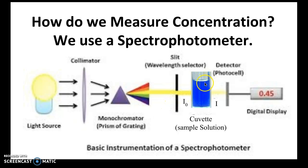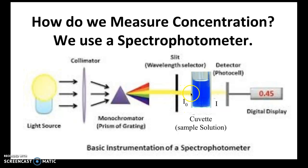Depending on the substance, it will absorb different wavelengths of light differently. A blue substance will absorb more in the orange-yellow region. We can adjust a slit so that only yellow light passes through into our sample. Since our sample absorbs some of it, the intensity of light hitting the sample (I₀) is stronger than what comes out. We take a ratio of these two intensities to measure absorbance — that's known as the Beer-Lambert law.